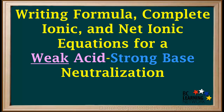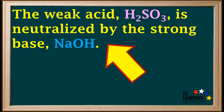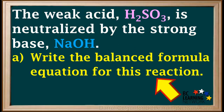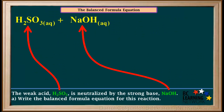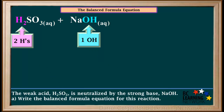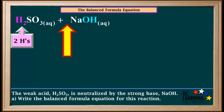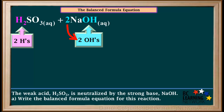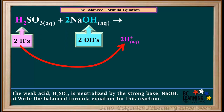Now we'll do an example where we write the formula, complete ionic, and net ionic equations for a neutralization reaction involving a weak acid and a strong base. We're given that the weak acid H2SO3 is neutralized by the strong base NaOH. The A part asks us to write the balanced formula equation. The two reactants are H2SO3 and NaOH — both are highly soluble in water, so they both have the subscript AQ. Notice the acid H2SO3 has two H atoms that can donate and the base NaOH has one OH. In order to get the same number of OHs in the base as Hs in the acid, we write the coefficient 2 in front of NaOH. We now have two OHs on the reactant side — two Hs from the acid and two OHs from the base, so they are now equal to each other.